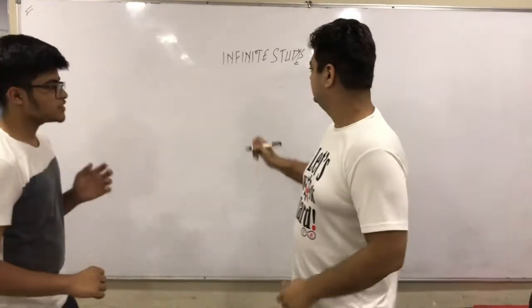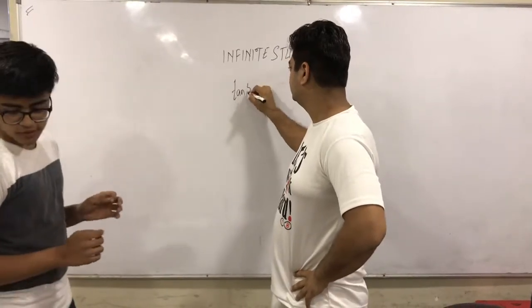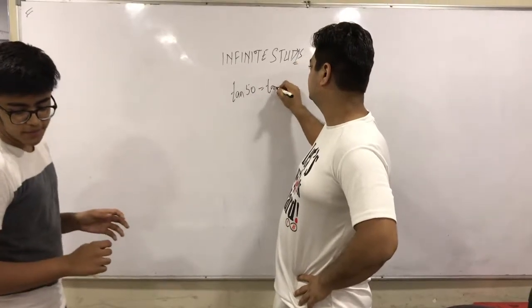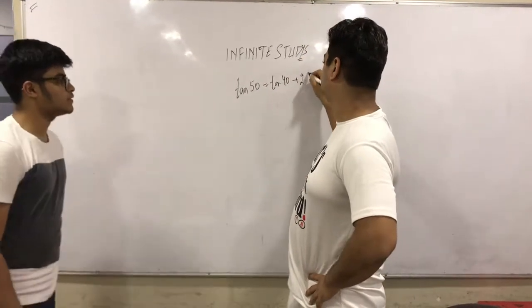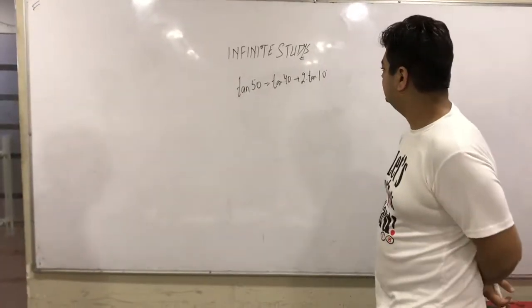I'll give you the question. We need to prove that tan 50 is equal to tan 40 plus 2 tan 10. That's interesting.